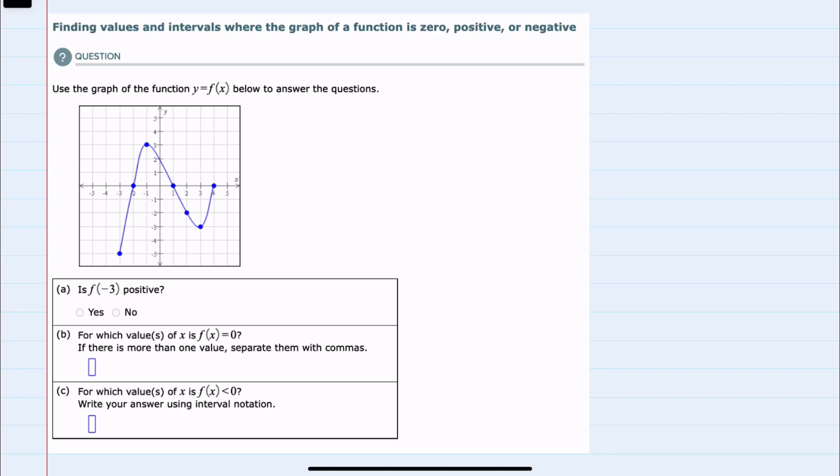In this video I'll be helping you with the Alex problem type called finding values and intervals where the graph of a function is zero, positive, or negative. We're given the graph of the function f and asked three questions about that graph.